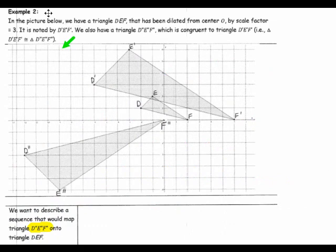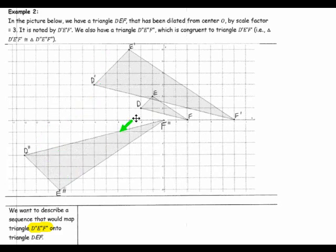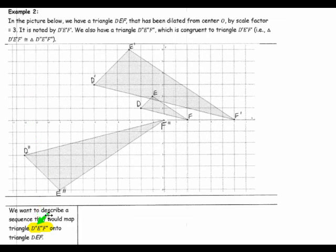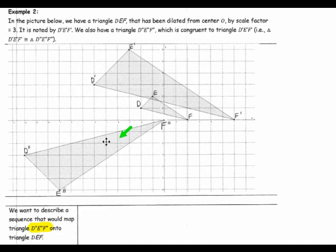This is Example 2. In the picture below, we have triangle DEF. It has been dilated from center O using a scale factor of 3. We also have triangle D double prime, E double prime, F double prime, which is congruent to triangle D prime, E prime, F prime — shown with a congruency symbol. We want to describe a sequence that would map triangle D double prime, E double prime, F double prime onto triangle DEF. Notice they are a different size and in a different location, so this will require two steps: a dilation to get the right size, and then a congruence to map it to the right location.